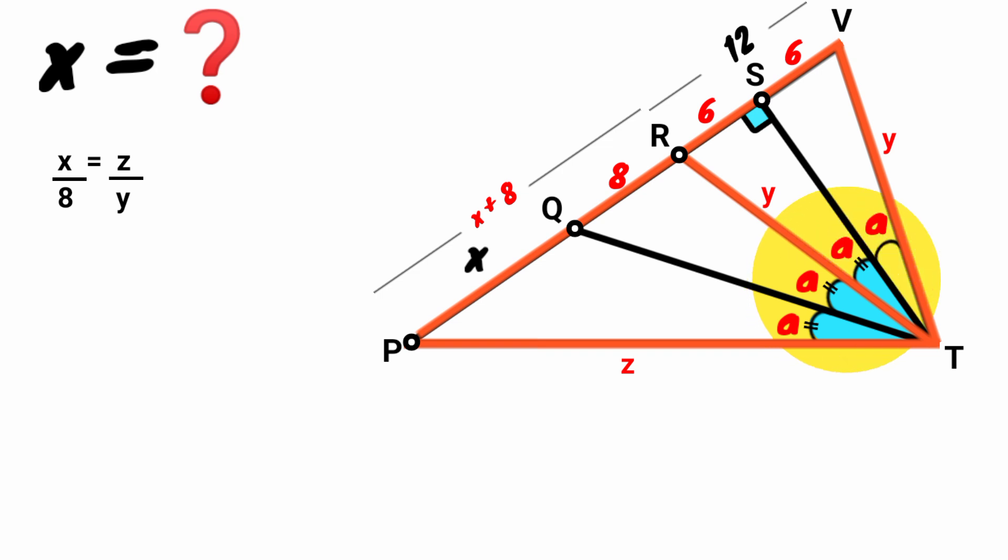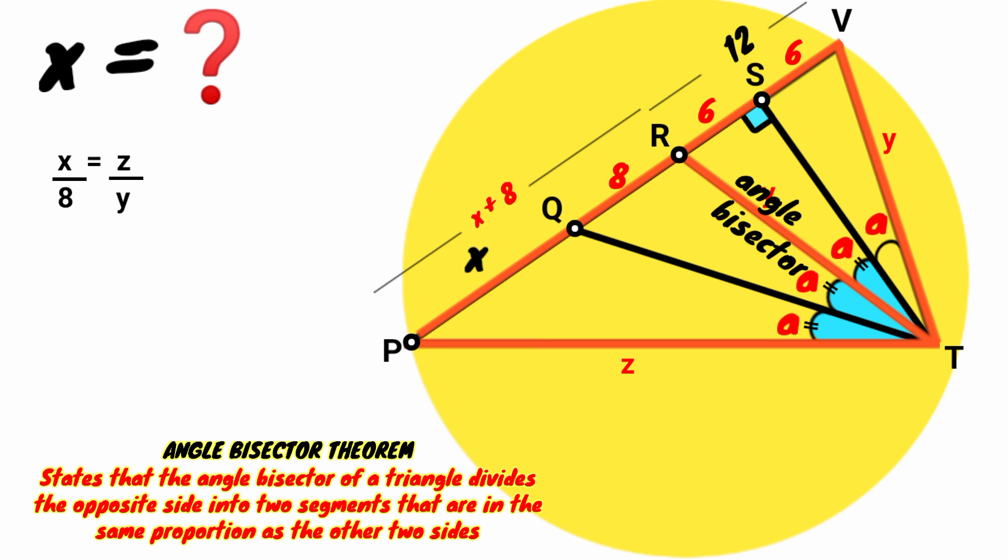Therefore line RT is an angle bisector, the angle bisector of triangle PTV. Recall the angle bisector theorem which we used earlier.